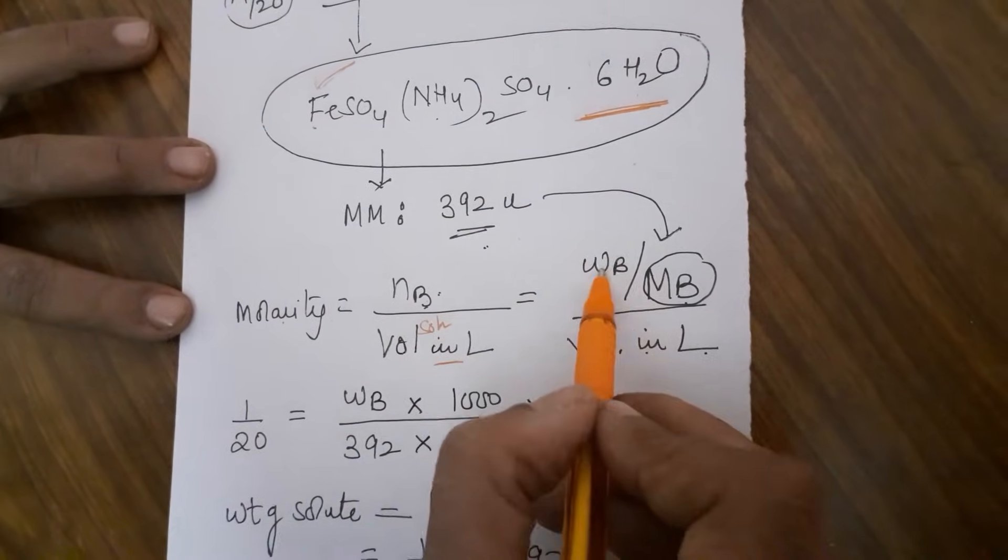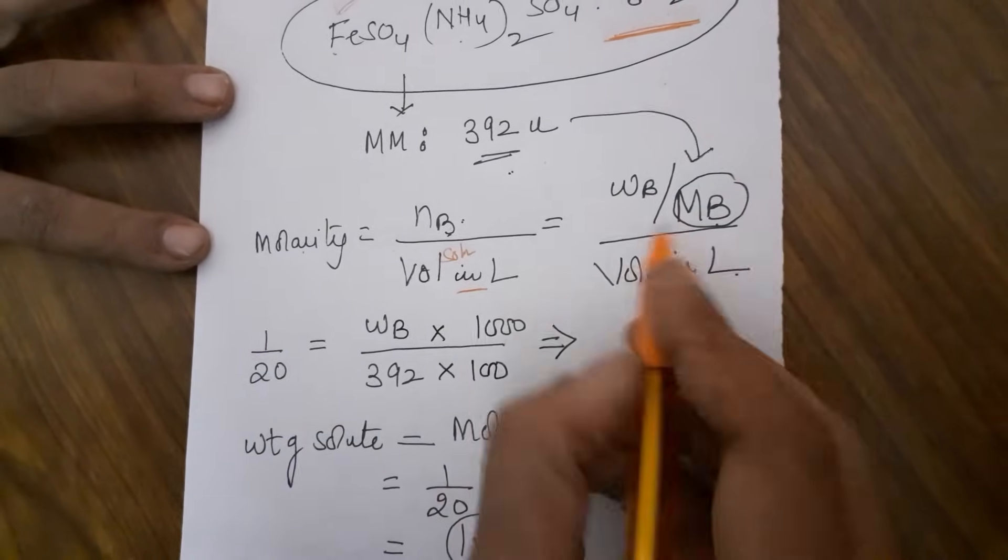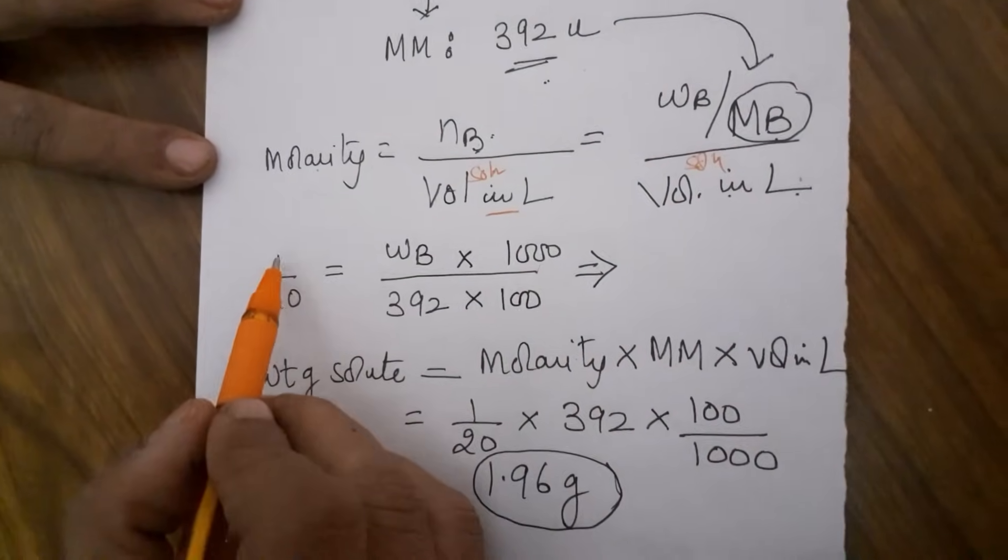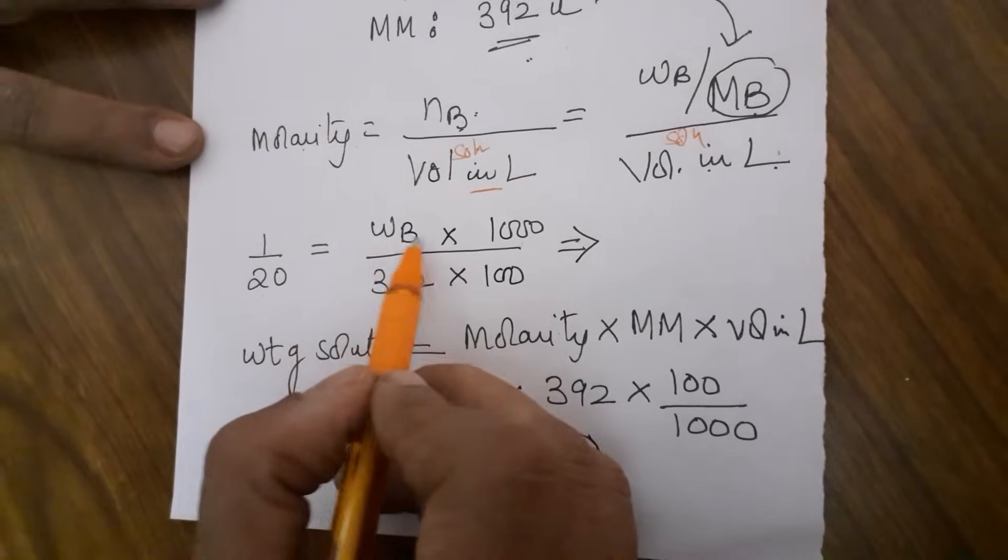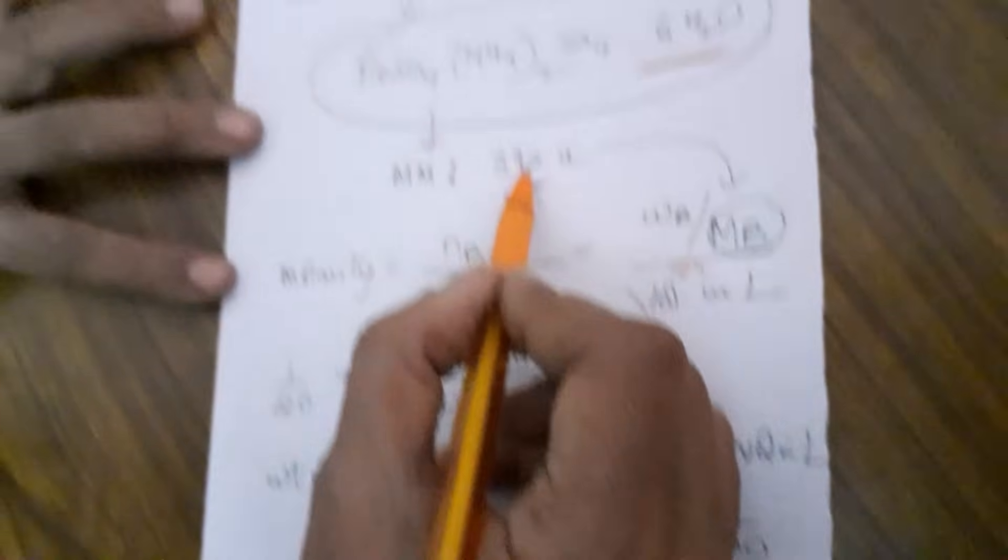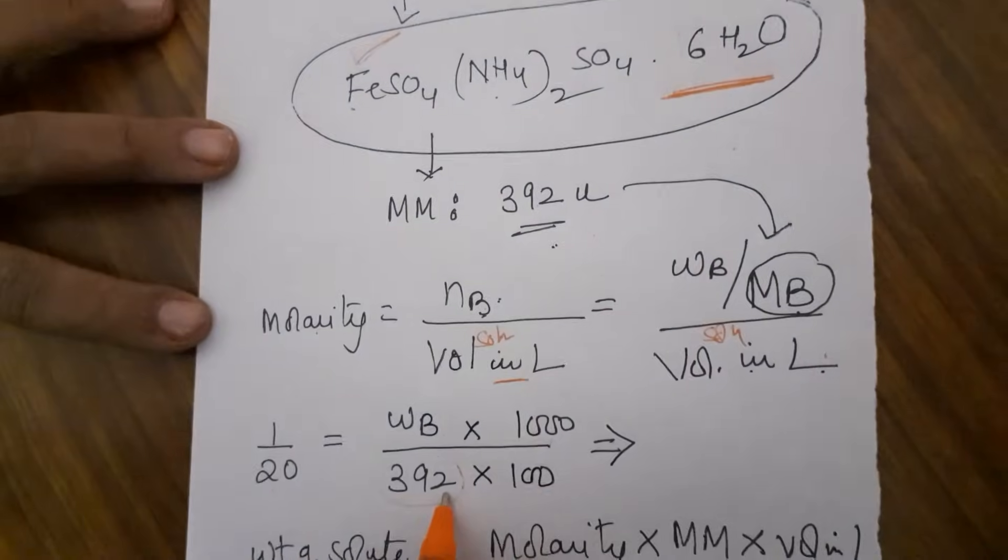What is moles? Weight of the solute upon molecular mass of the solute divided by volume in liters. So how much is molarity? Weight of the solute is 1 by 20. We have to take out how much we have to weigh. 392 is the mass of this which you should learn.